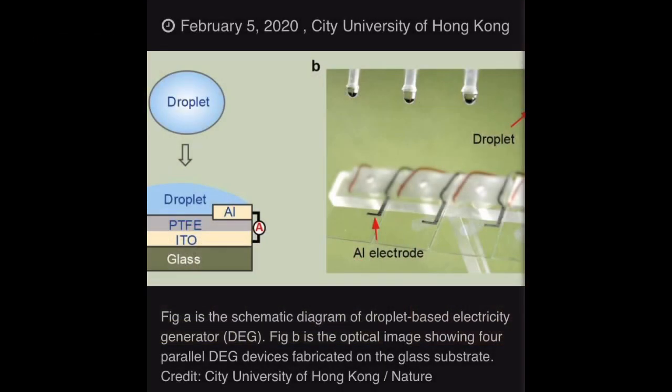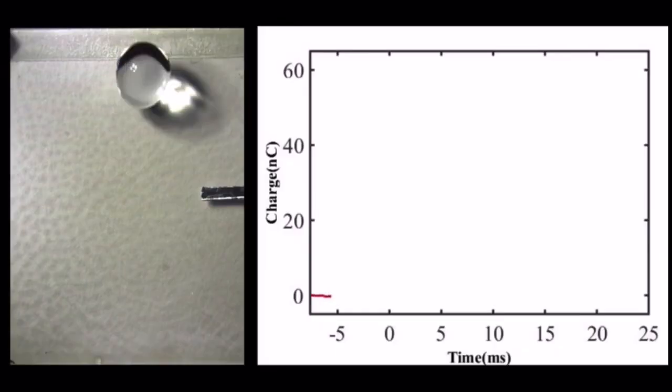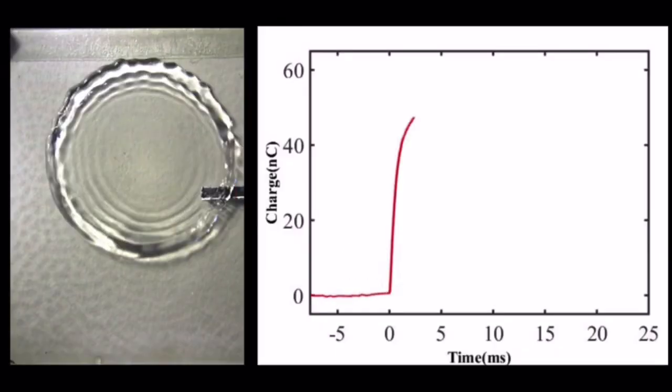Here we develop a device to harvest energy from impinging water droplets by using an architecture that comprises a poly-tetrafluoroethylene film on an indium-tin oxide substrate plus an aluminum electrode.